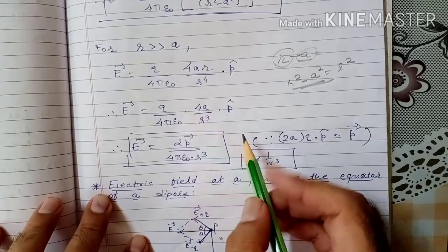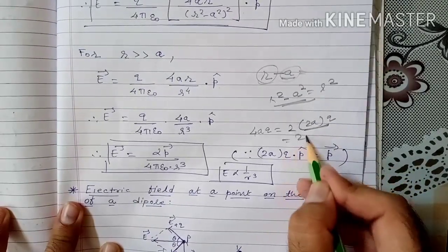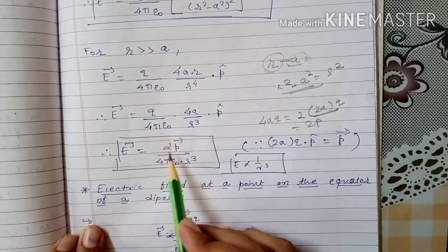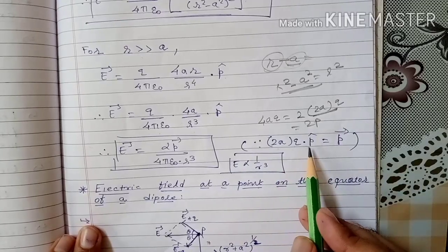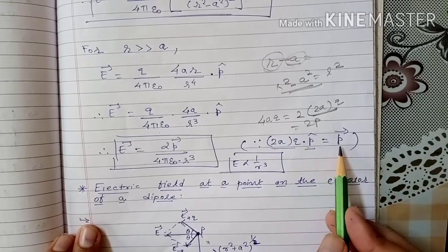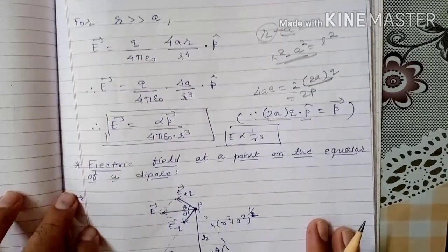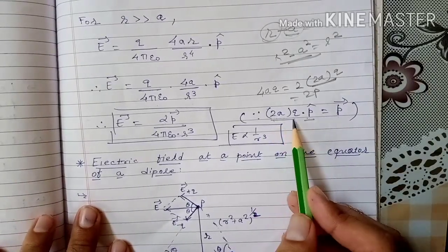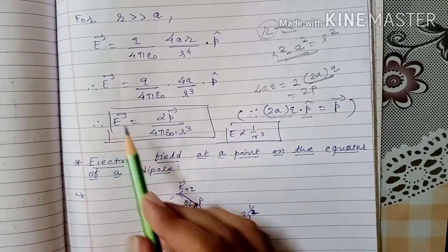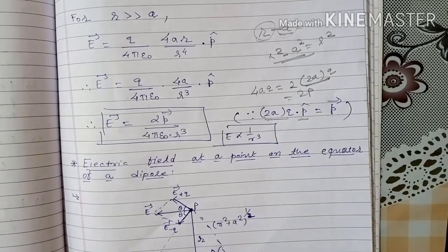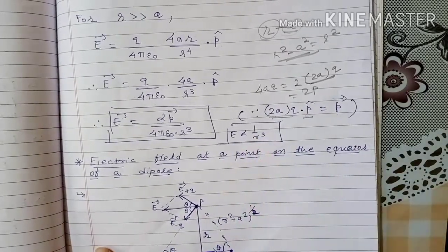Since 4a = 2 × 2a, and 2a × q × p-cap equals 2p-vector (electric dipole moment vector), we can write: E = (1/4πε₀) × 2p-vector/r³. Here 2a is fixed, magnitude of charge is fixed, so magnitude of p is fixed, and 1/4πε₀ is constant. Therefore electric field on the axis is inversely proportional to the cube of the distance when r >> a.